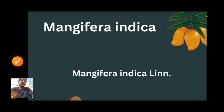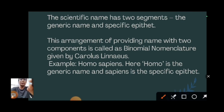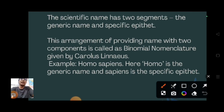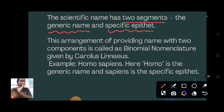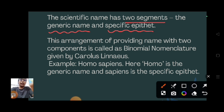In more detail about binomial nomenclature: the scientific name is written in two segments - the generic name and the specific epithet. The first will be the generic name or genus, and the next will be specific epithet or species name. This arrangement of providing a name with two components is called binomial nomenclature, which was given by Carolus Linnaeus.